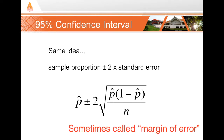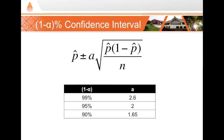We start with our best estimate of the population proportion, which is our sample proportion or p-hat, and we recognize the uncertainty from sampling variability. If we took 100 samples of this size, we would expect that in 95 of those 100 samples the true population proportion would lie within this range. For other confidence intervals, you adjust the multiplier — for a 99% confidence interval, multiply the standard error by 2.6.